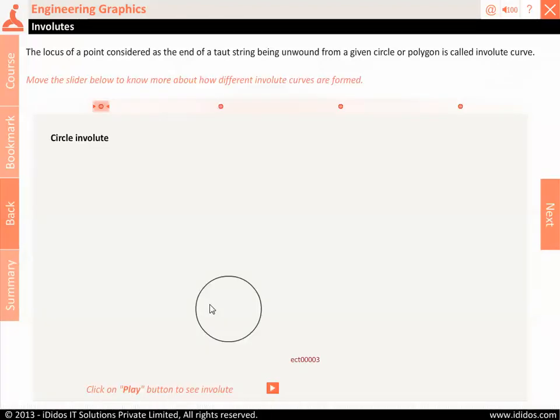The locus of a point considered as the end of a taut string being unwound from a given circle or polygon is called involute curve.